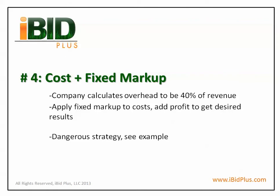The fourth strategy is cost plus a fixed markup. Here, the company calculates overhead to be 40% of revenue. Then they apply a fixed markup to all costs and add profit to get the desired result. This is another dangerous strategy, which we will explain in a further example.